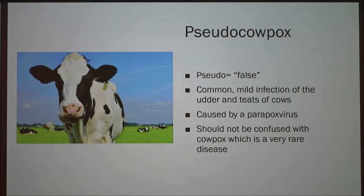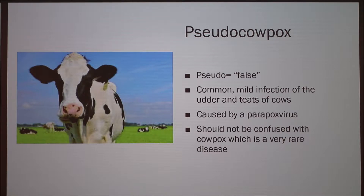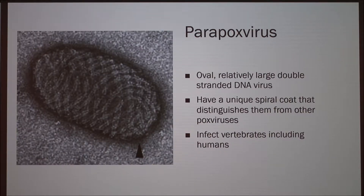Pseudo cowpox is caused by the parapoxvirus, and it should not be confused with regular cowpox, which is a very rare disease that shows more lesions on the teats and udder. Cowpox used to be a big issue many years ago but today it's pretty rare. The parapoxvirus is an oval-shaped, relatively large double-stranded DNA virus. It has a unique spiral coat that distinguishes it from all other pox viruses.